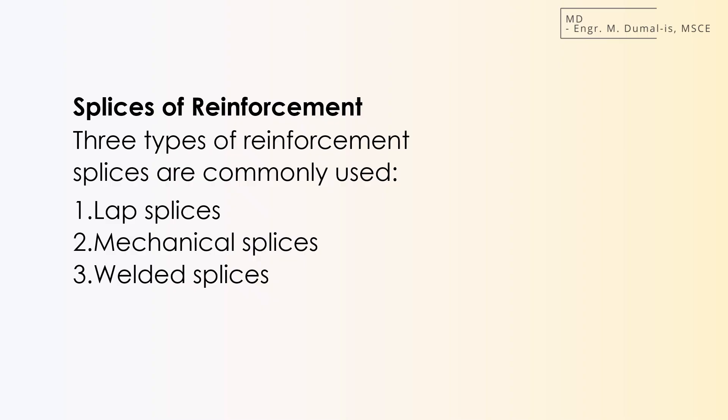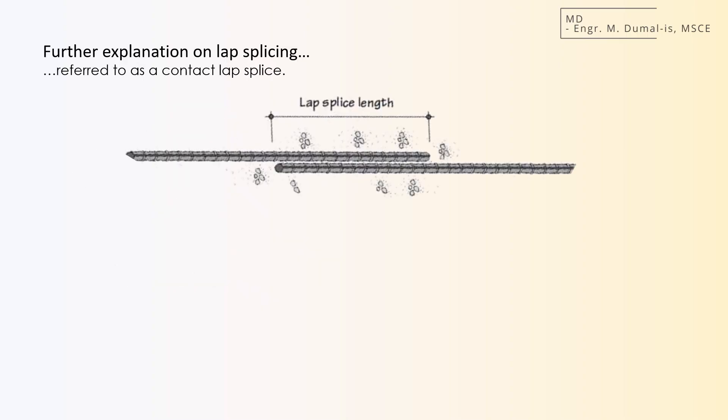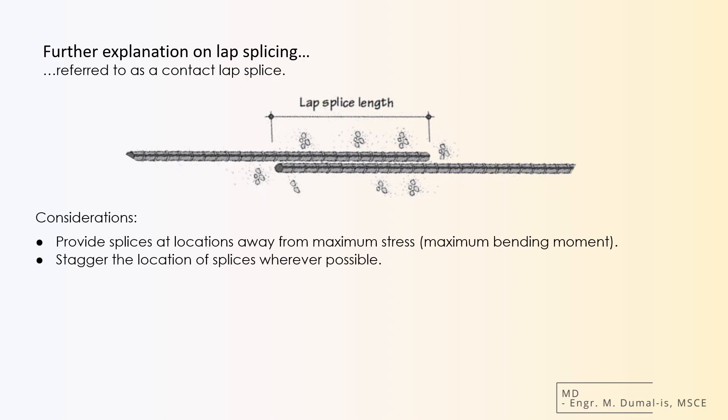and they all aim to do one thing: make sure the force transfers smoothly from one bar to the next without creating a weak point in the system. In a lap splice, the bars are generally in contact over a specified length and are wired together. This is commonly referred to as a contact lap splice. The force in one bar is transferred to the surrounding concrete by bond, which subsequently transfers it to the adjoining bar. Splitting cracks can occur at the ends of a splice.